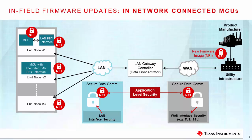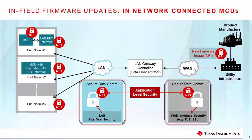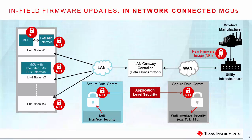This slide shows an example representation of the new firmware image flow in network-connected systems. The new firmware image is transferred from the product manufacturer to the end nodes with MCUs over the network — in this case, WAN and LAN networks. It is important to point out that, as part of the network security, the LAN and WAN interfaces incorporate necessary security measures that are dictated by the interface protocols used in the network connectivity. Applying security measures to in-field firmware update processes at an application level adds an additional layer of security to the one provided by the network.